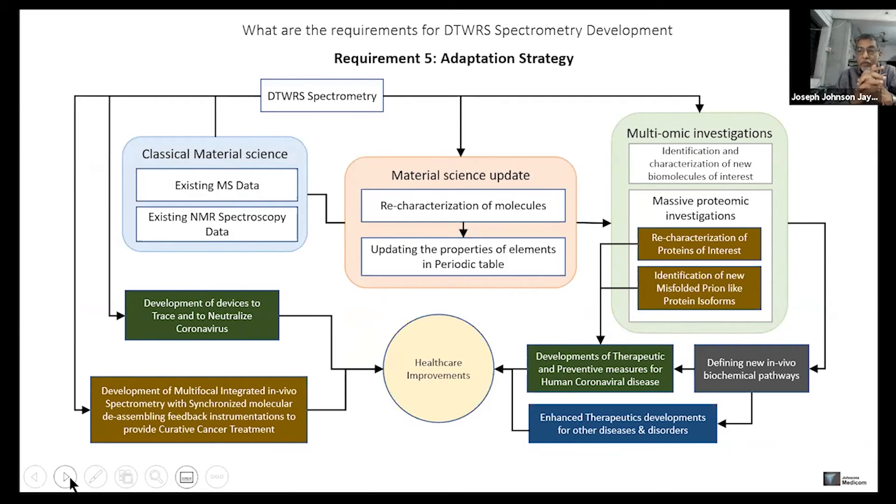So then, how are we going to adapt that outcome from this spectrometry? The outcome from the spectrometry is expected to update the material science specific to re-characterization of molecules and updating the properties of the elements in the periodic table. Another thing is identification and characterization of new biomolecules and the re-characterization of protein. So the existing proteins, new characteristics can be added.